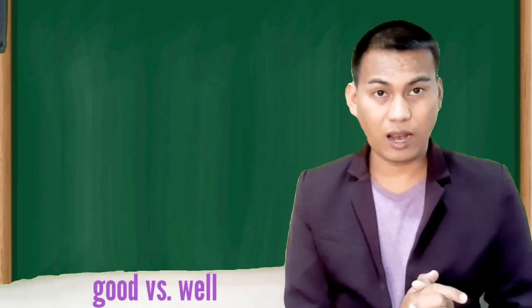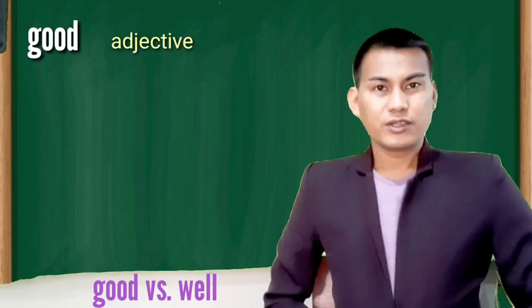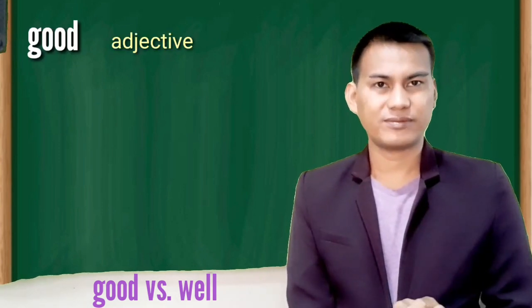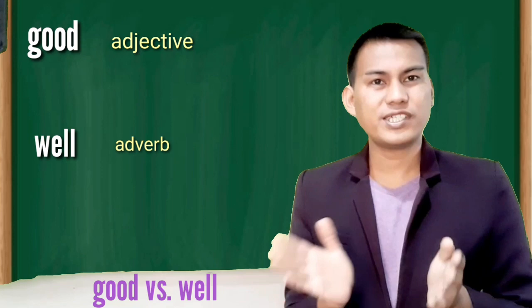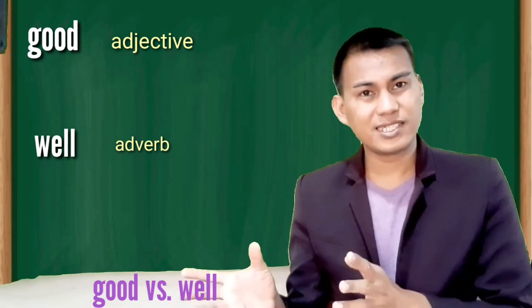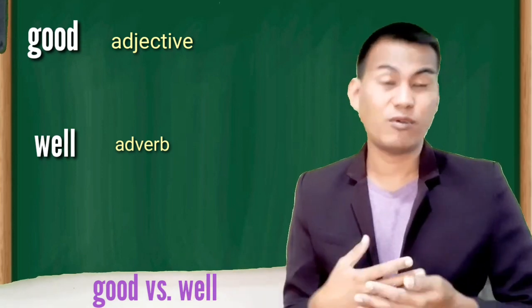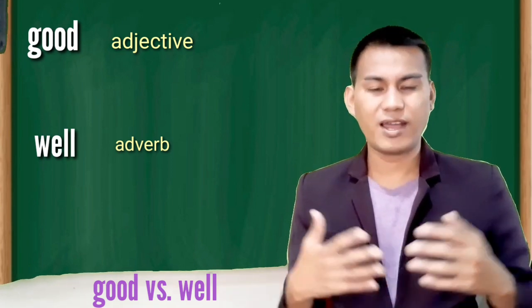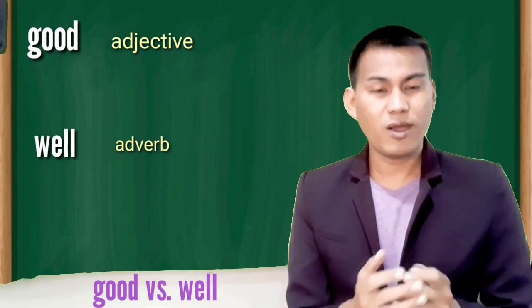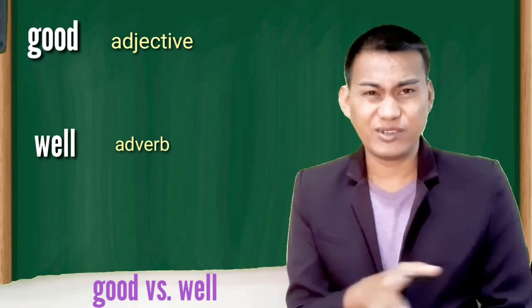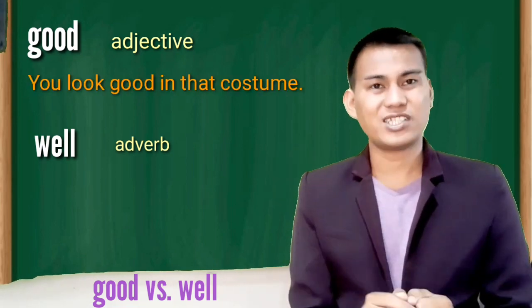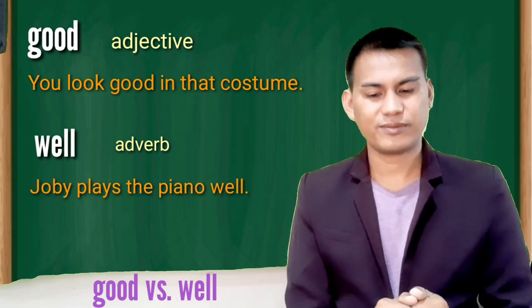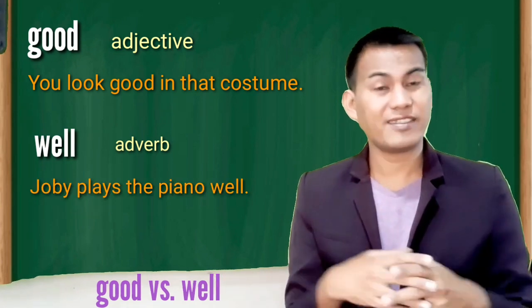Good versus well. Good is an adjective. Well is an adverb. Use good before nouns and after linking verbs to modify the subject. Well is an adverb. Use it to modify action verbs. Well may also be an adjective meaning in good health. You look good in that costume. Joby plays the piano well.